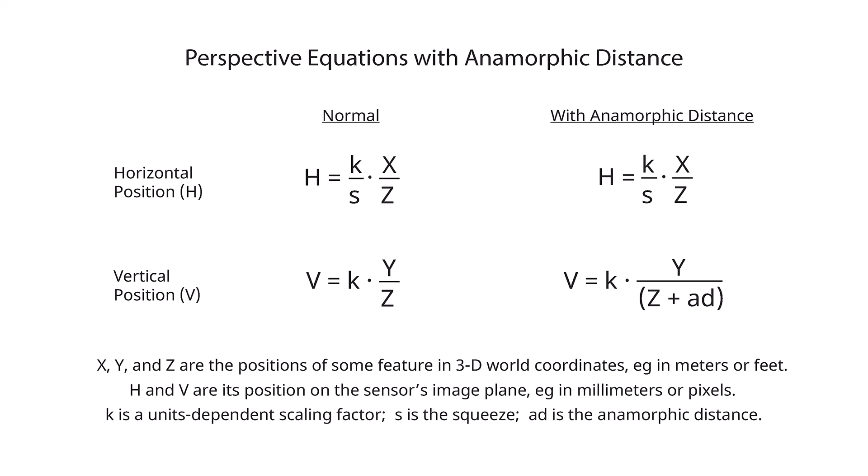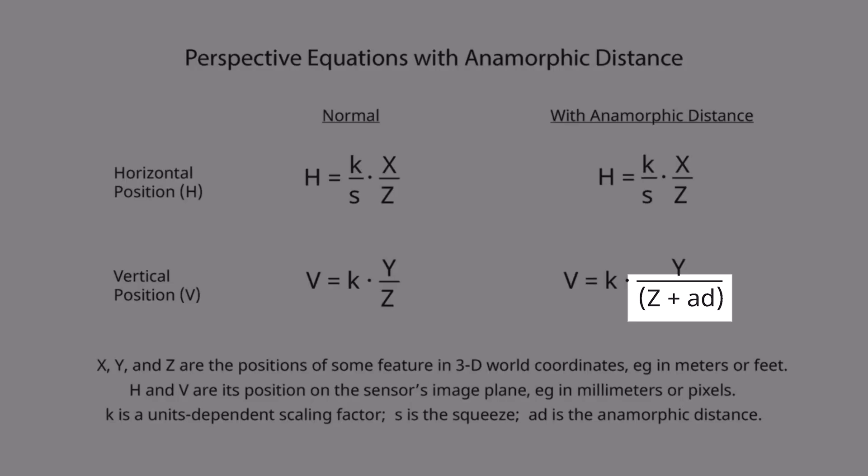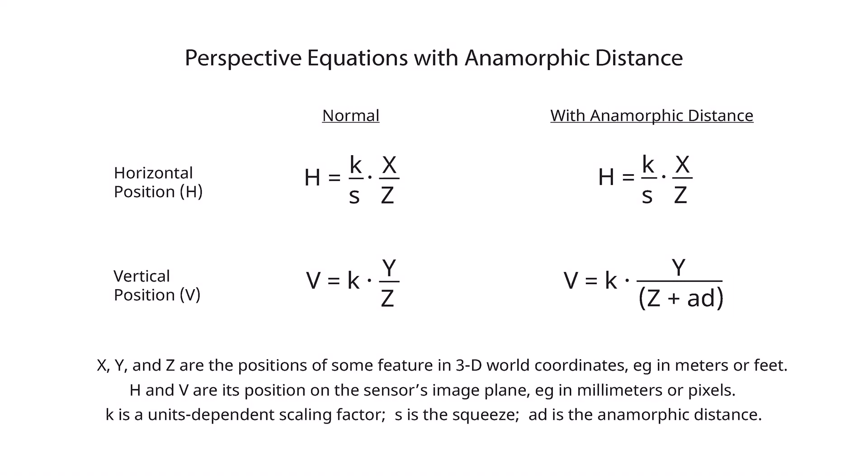Despite the equations, what we're doing is simple and duplicates what's happening in the real world. We add the anamorphic distance to the regular distance used for vertical perspective. We put it in the vertical rather than the horizontal term, because if people do adjust the camera mount to match the nodal point, typically they use a panning process that finds the horizontal nodal point. Also, by including the anamorphic distance in the vertical equation, it won't interact with the horizontal field of view that we normally work with.